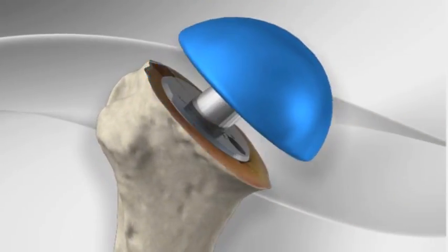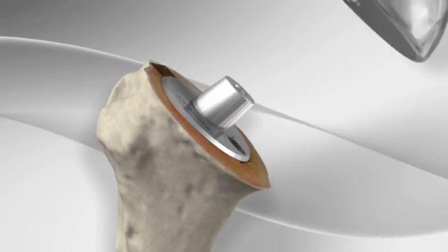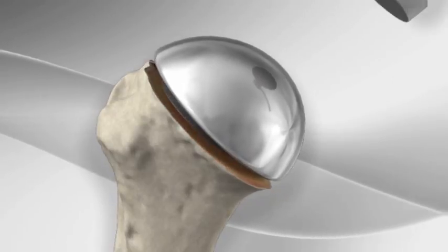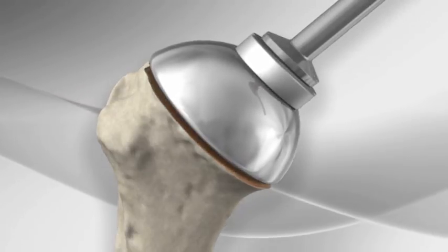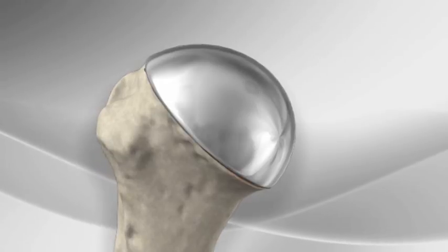If the surgeon is satisfied with the performance of the trial implant, the final implant head is then impacted into the shaft to replace the surface of the joint and complete the operation.